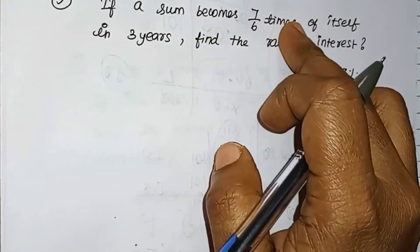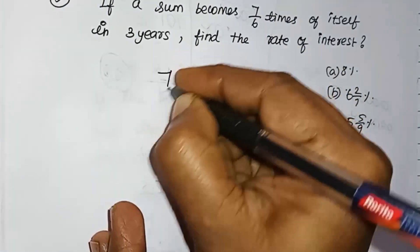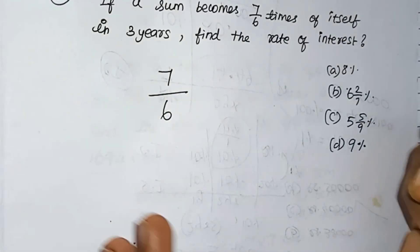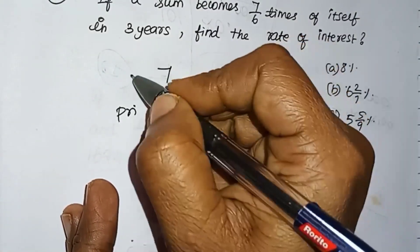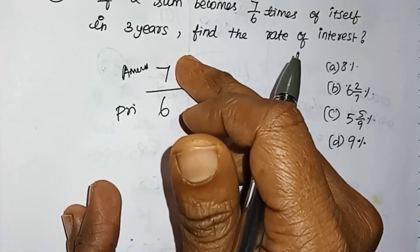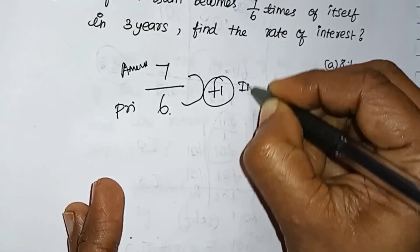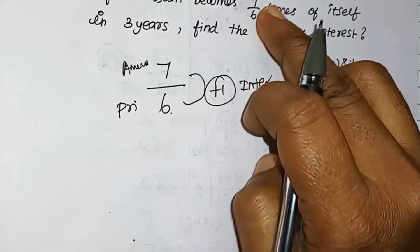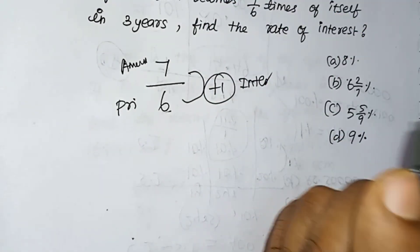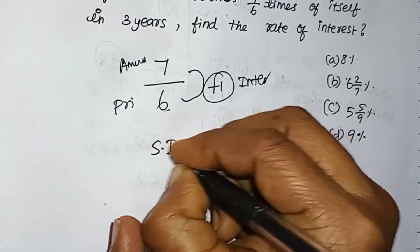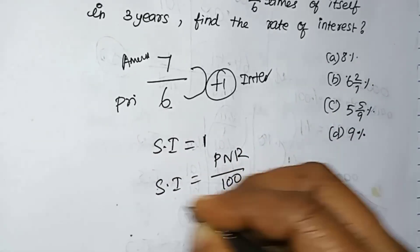If your sum becomes 7/6 times of itself in 3 years, find the rate of interest. For example, if the principal is 6, the amount becomes 7/6 times — so the amount is 7. The simple interest is 7 minus 6, which equals 1. So simple interest is 1. Now we apply the simple interest formula: P × N × R / 100.